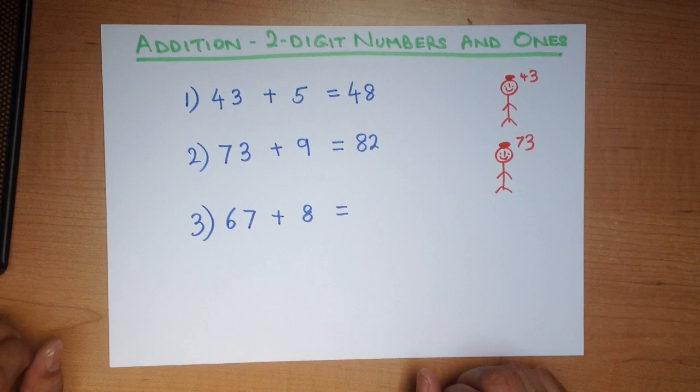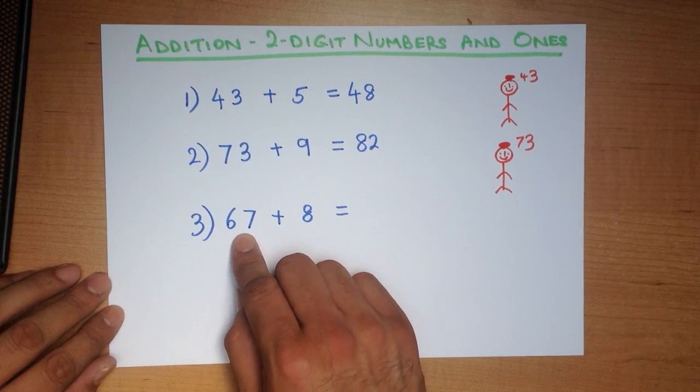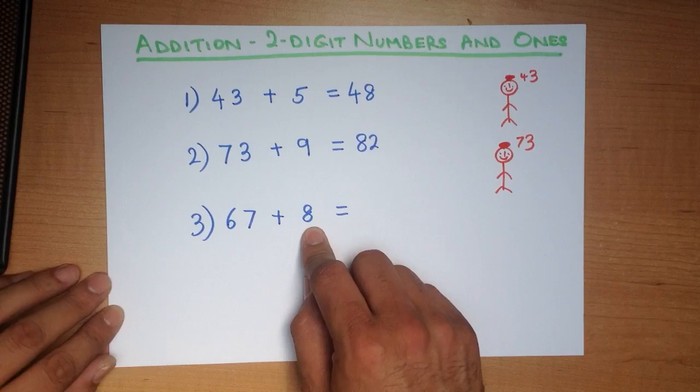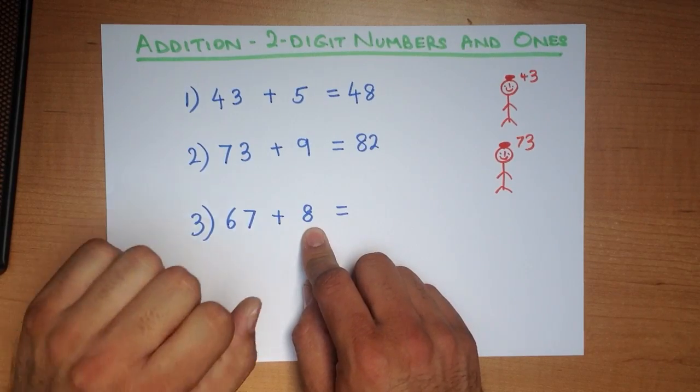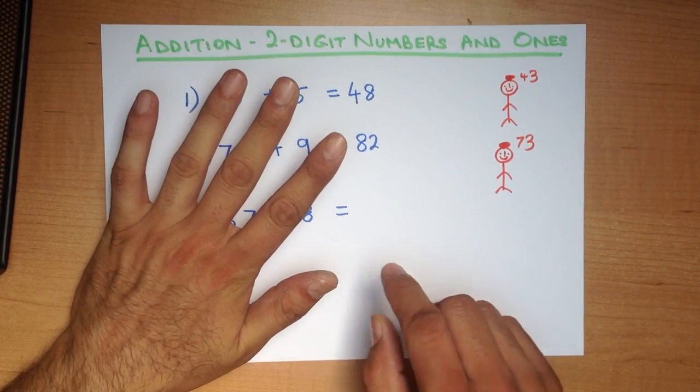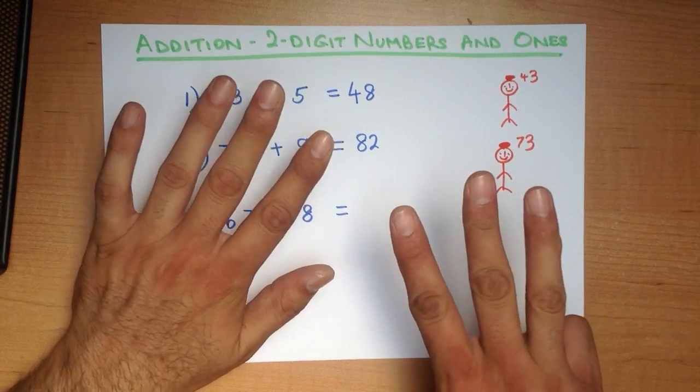I'm not going to draw the figure this time. I'm just going to say there is 67 on my head. We need 8 fingers. There's 5, 6, 7, 8. That's 8.